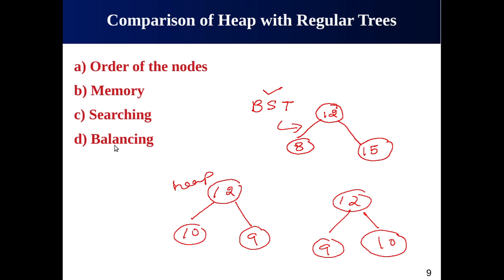Another comparison is balancing. A BST must be balanced for most operations to have O(log n) performance — you might need AVL trees or red-black trees. With heaps, we don't need the entire tree to be sorted; we just need the heap property to be fulfilled. Balancing is not an issue in a heap because of how it is structured, and a heap can always guarantee O(log n) performance.